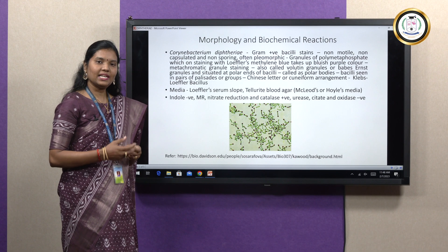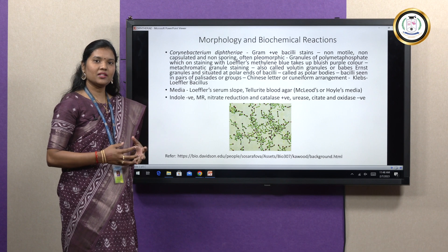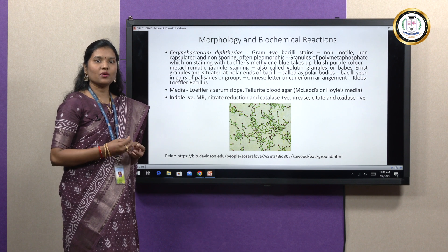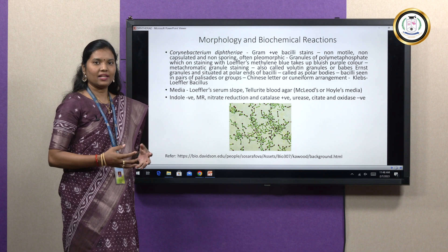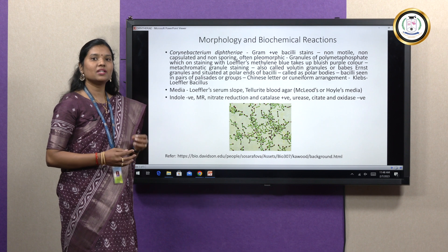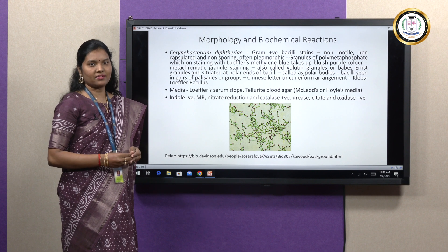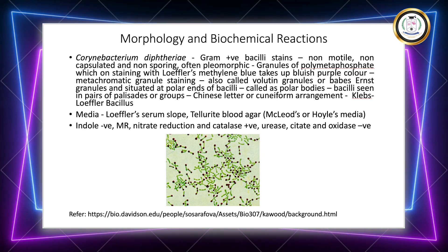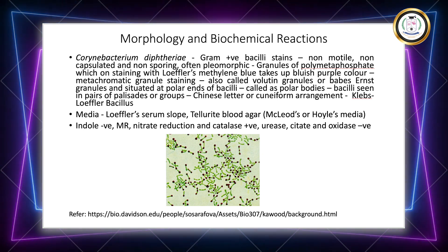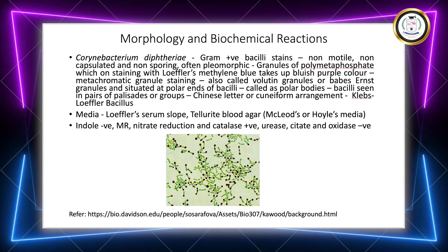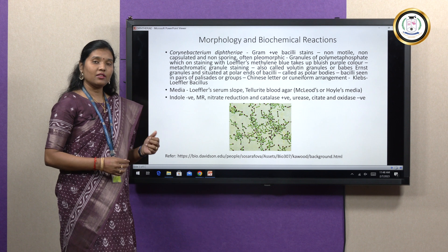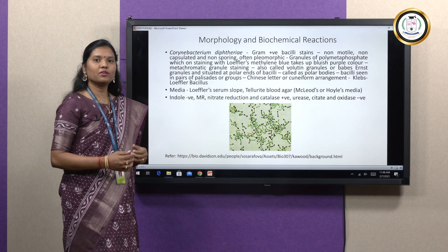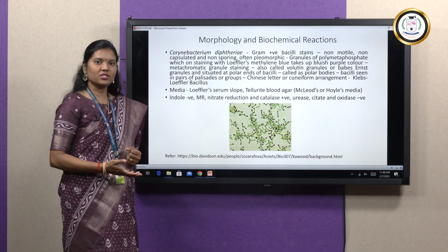The organisms are generally arranged in pairs, palisades, or groups, so they resemble the English letters V or L. This type of arrangement is called Chinese letter arrangement or cuneiform arrangement. This bacilli is also called Klebs-Loeffler bacilli, credited to its discoverers. The organisms are basically pleomorphic, which means they could often change their shape.